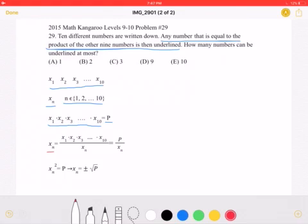So, how do we write the product of the other nine numbers? We write them as being x1 times x2 times x3, and so on, until x10. But we must divide by x_n, because x sub n cannot be part of that product.